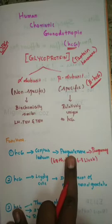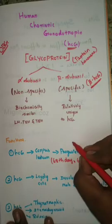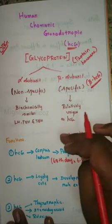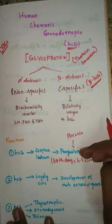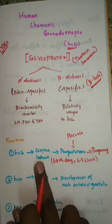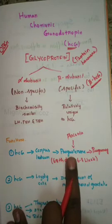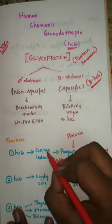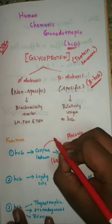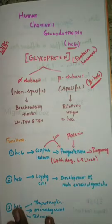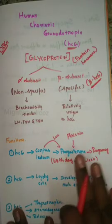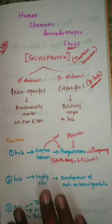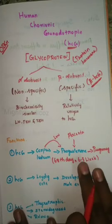After the 68th day, the placenta takes over the production of progesterone and maintains the pregnancy. The corpus luteum then produces very low amounts of progesterone. At the same time, HCG produced by the corpus luteum also decreases. This is the first function of HCG.